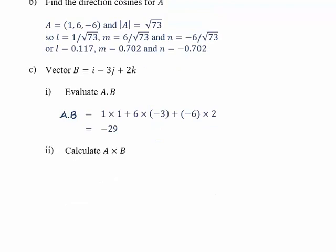Part C2. Calculate A cross B. A cross B is the vector product of two vectors. And one way to do this is to use a determinant. So we set up the determinant like this, where we've got I, J, K, and then we've got vector A and vector B.